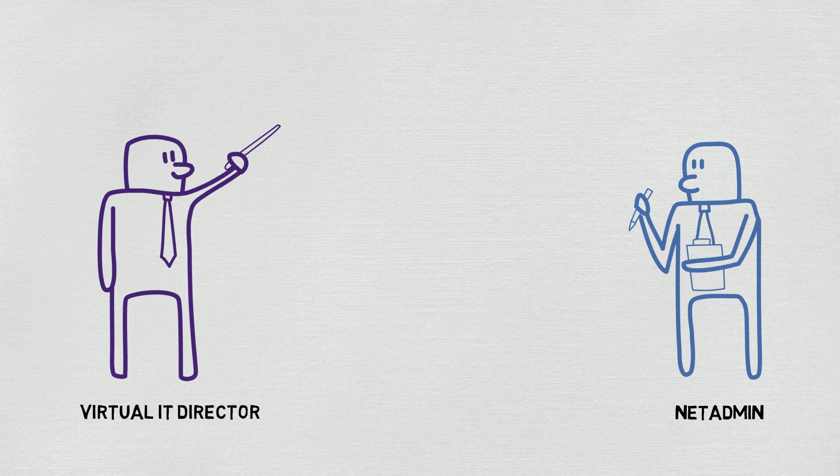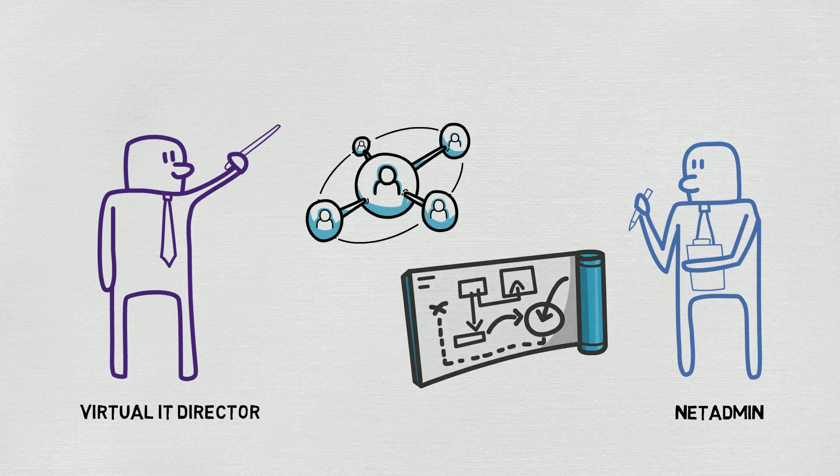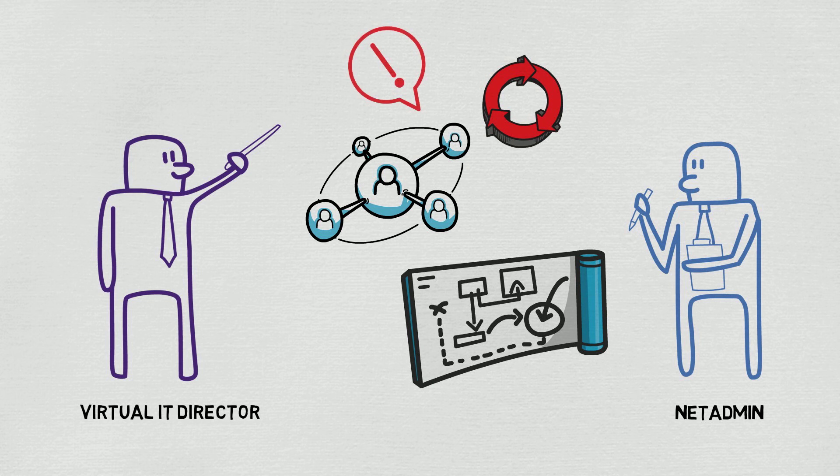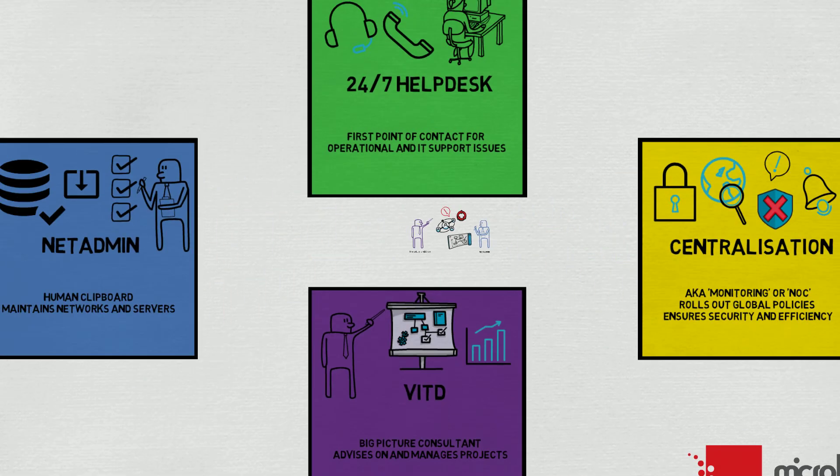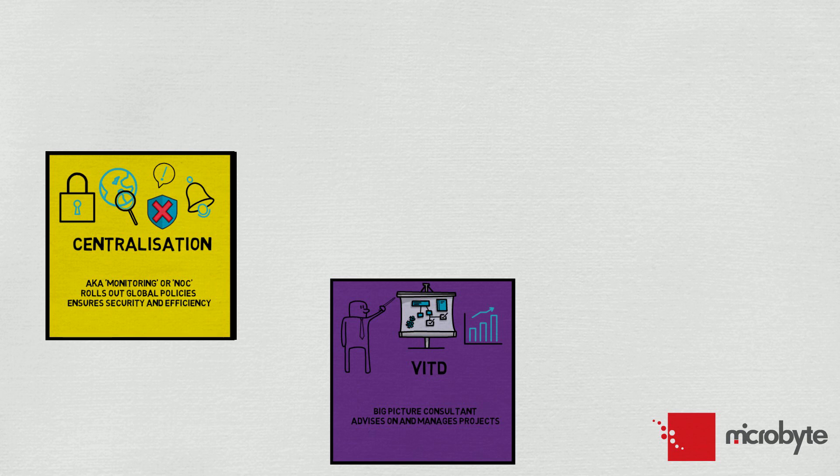This is where your NetAdmin and Virtual IT Director discuss how to improve communication and update management. The VITD agrees on improved processes, while centralization rolls out new automated alerts, and the new improved process begins again.